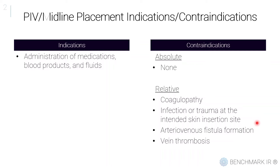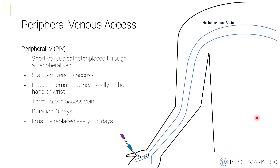If they have an arteriovenous fistula — such as a fistula for dialysis access — you may want to go from a different access point. Or if they have a thrombosis of the vein you're intending to access, you may want to try another site. As far as a peripheral IV goes, it's a short venous catheter placed through a peripheral vein. It's a single-lumen catheter, usually placed through smaller veins in the hand or wrist area, and the duration is about three days — they need to be replaced every three or four days.